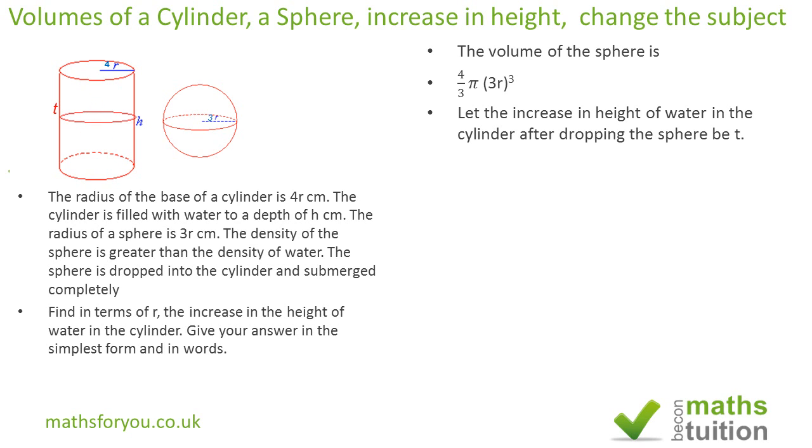So we then say that the new volume of water as it were is pi 4R squared T. Now it's going to be 4R because the radius of the cylinder is 4R not just R, it's 4R. So we're going to square all of the 4R there. So all that's equal to the volume of the cylinder.